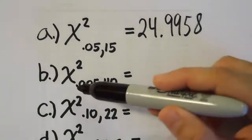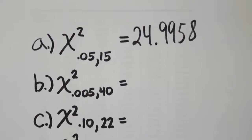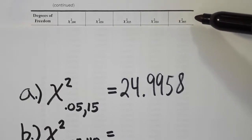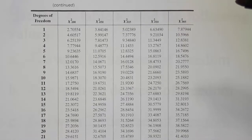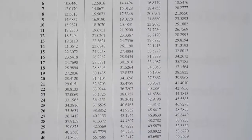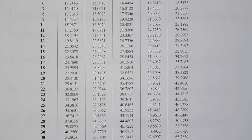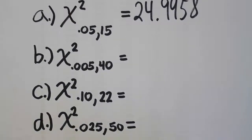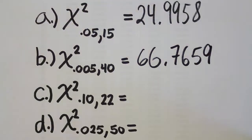Part B asks for chi-squared₀.₀₀₅ with 40 degrees of freedom. The 0.005 column is the far right column of the table. Scrolling down to 40 degrees of freedom — which requires moving the table up slightly since it's off-screen — we find the value 66.7659. So the answer to part B is 66.7659.